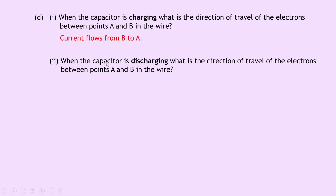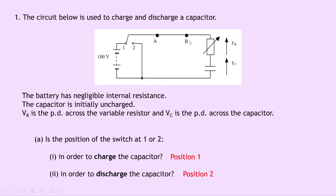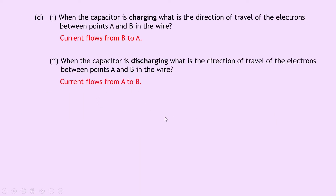Part D2 asks for the direction of electrons between A and B when the capacitor is discharging — it's just the opposite. The switch moves from position 1 to position 2, and the current moves off the capacitor plates, flows up and along through the switch, hits A first, then moves through B, and back down to the other side of the capacitor. So the current flows from A to B.